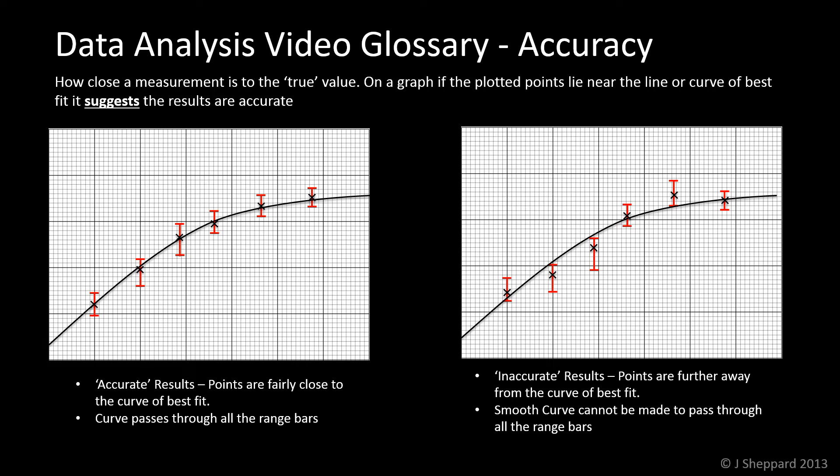If that's the case, it suggests the results are accurate because we can see a nice trend. On the left-hand side, we've got the plotted points and the red range bars, and a line of best fit. The line of best fit can easily go through all of the range bars. One smooth curve goes through all the range bars and near the points, so we say those results are probably quite accurate.